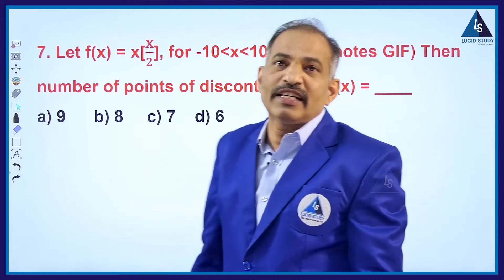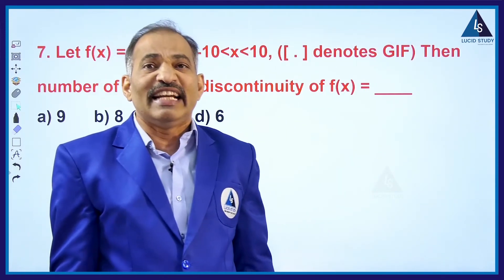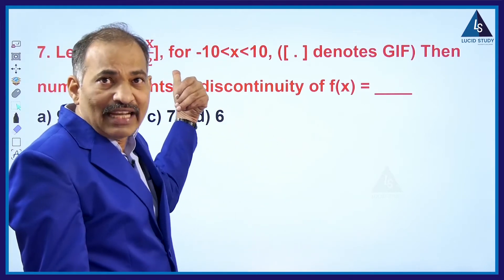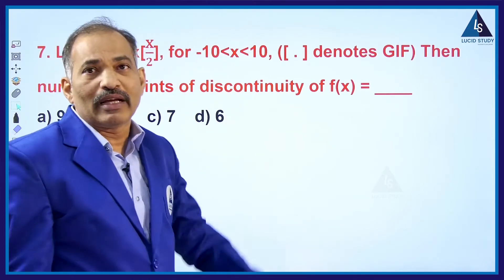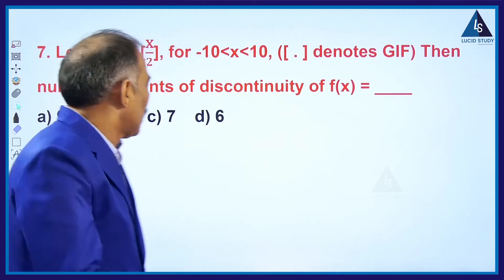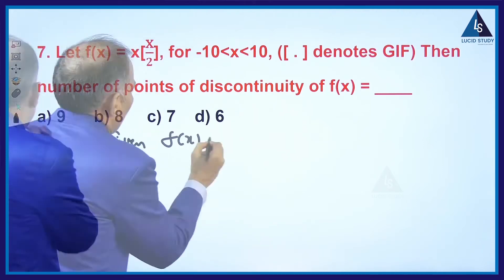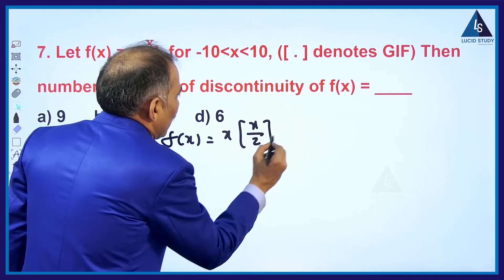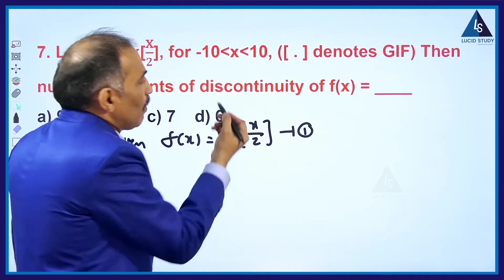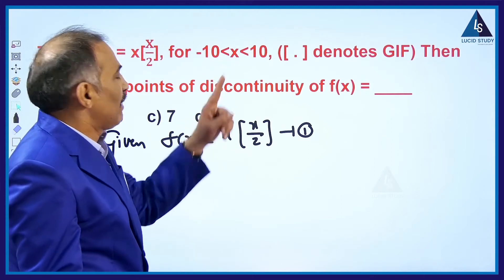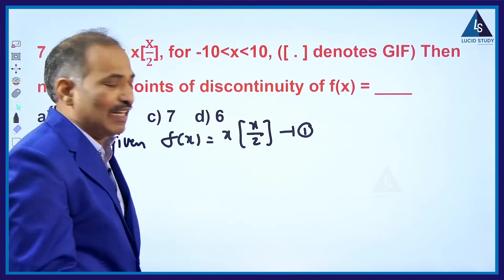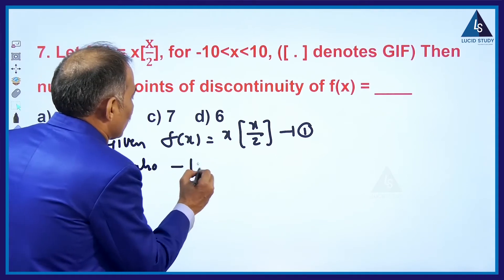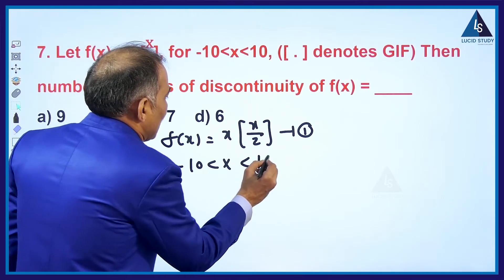We know step functions are discontinuous at integral values. So wherever x/2 becomes an integer, f(x) is going to become discontinuous. The given function is f(x) = x·[x/2], and the given x limits are -10 < x < 10.